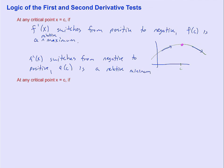That's going to be very different in the next one. At any critical point x equals c, if f double prime of c is negative, that means f of c is a relative max.